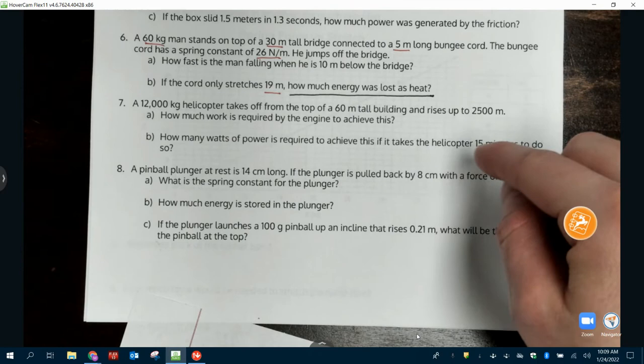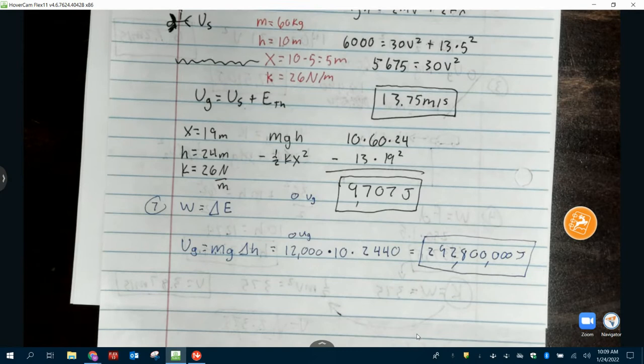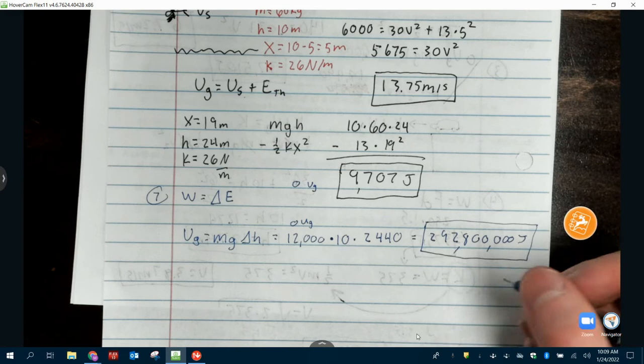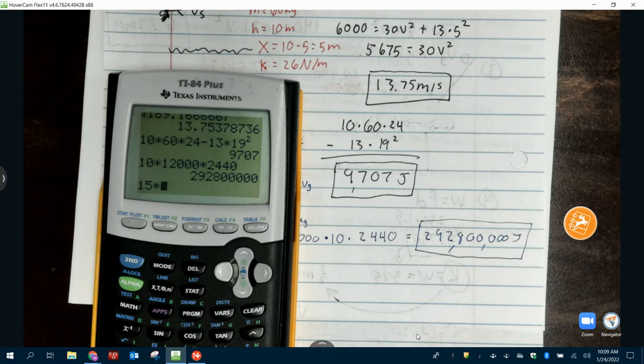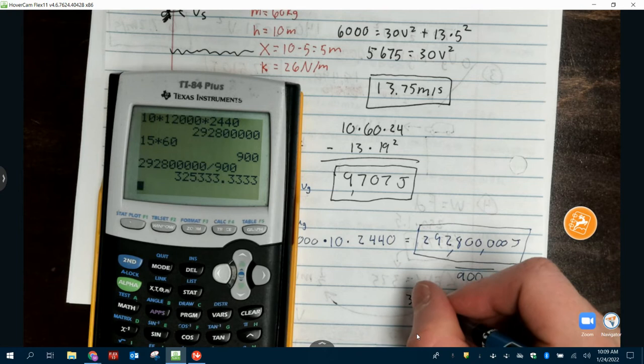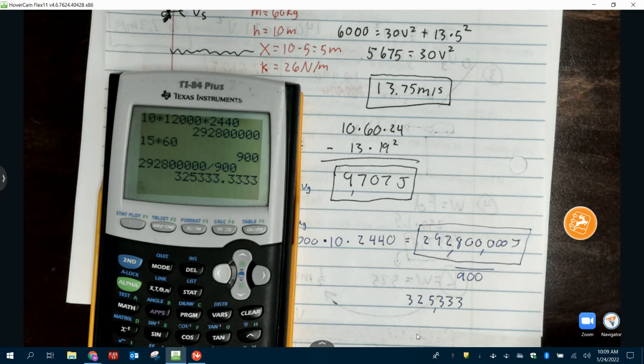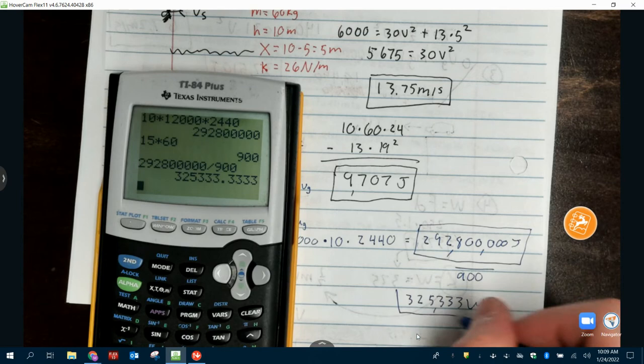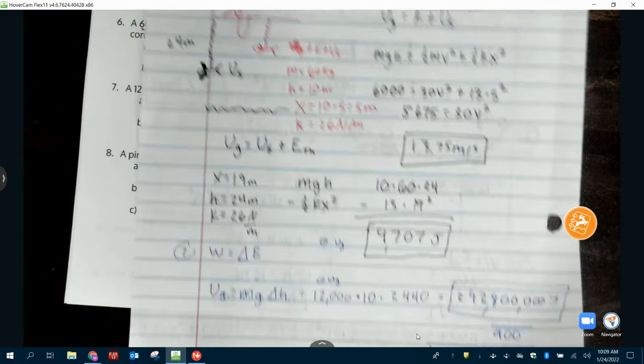How many watts of power is required to achieve this if it takes a helicopter 15 minutes to get up there? How do we get power? We just got to divide by a time. Are we dividing by 15? No. We divide by 15 times 60. 15 times 60 is 900 seconds. So we just divide our answer by 900. And we still get a really big number. 325,333 watts. Power is measured in watts.